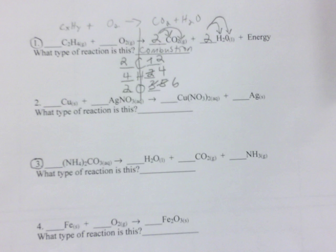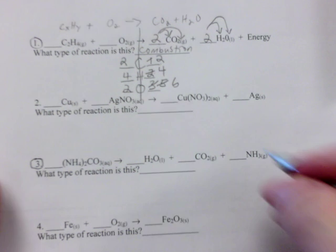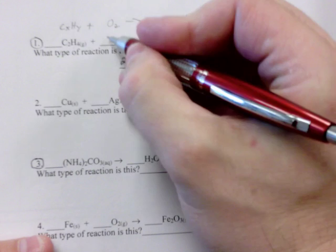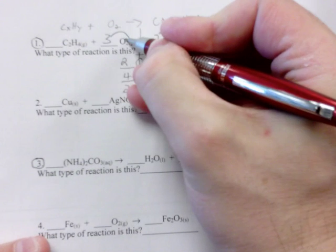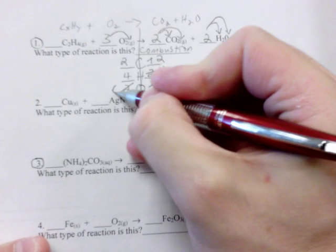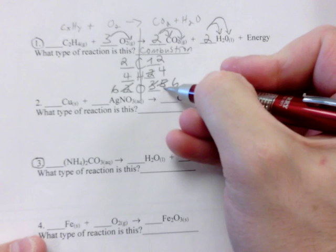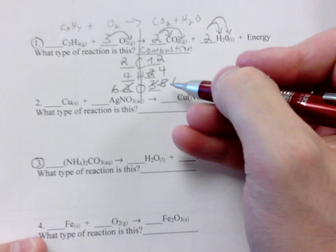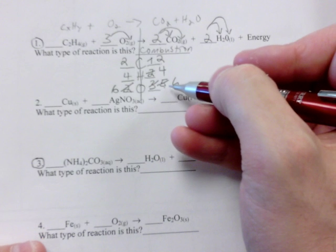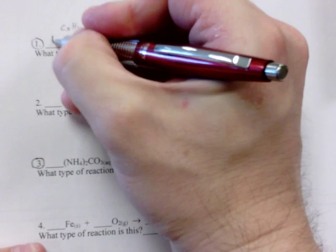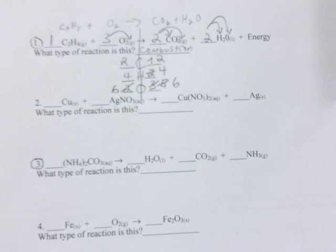Balancing C's and H's first was a good move — now we can go back to the left-hand side where we have fewer O's. This is a pretty easy fix: 3 times 2 is 6 oxygens. C's are equal, H's are equal, O's are equal — correct ratio of ingredients. Going to step five, we put a 1 in any blanks that are left over. There's problem one balanced.